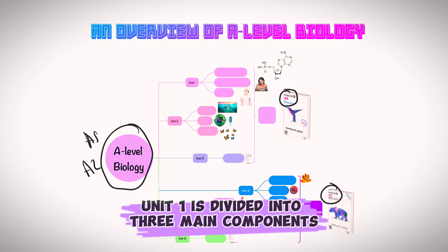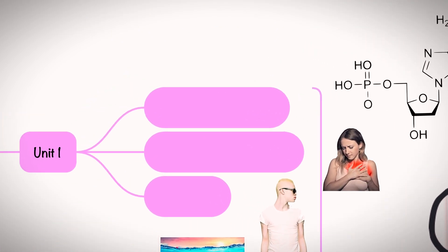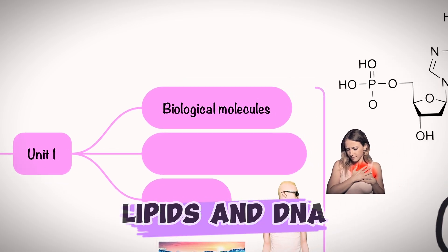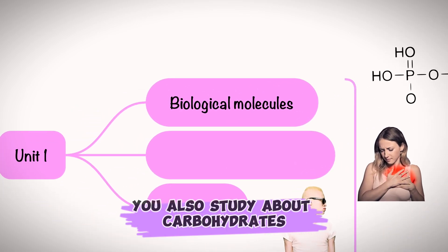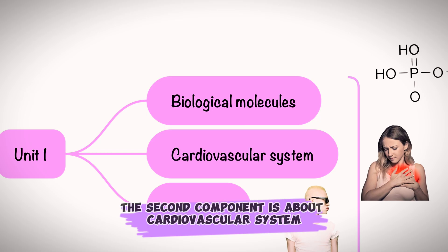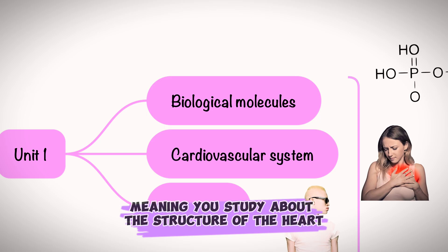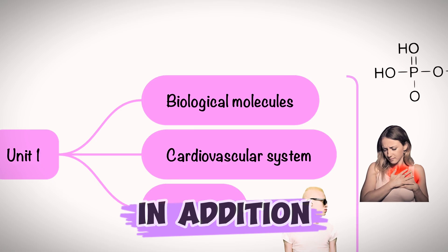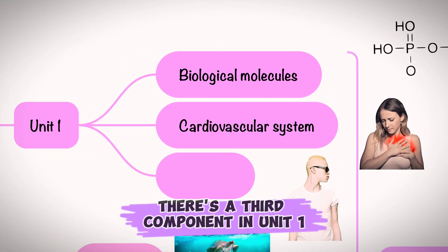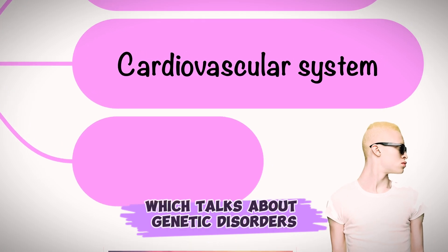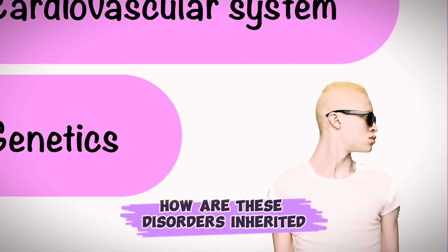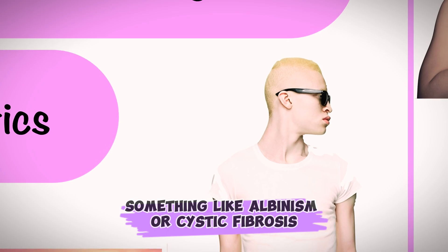Unit 1 is divided into three main components. The first is about biological molecules — you study proteins, lipids, DNA, and carbohydrates. The second component is about the cardiovascular system — the structure of the heart, blood vessels, and cardiovascular disease. The third component talks about genetic disorders, how they are inherited — things like albinism or cystic fibrosis.